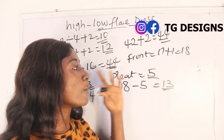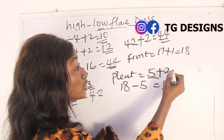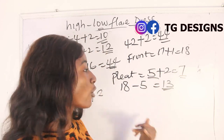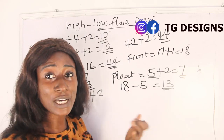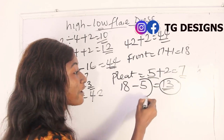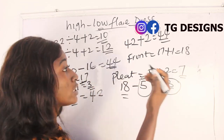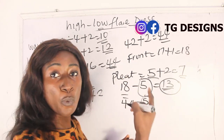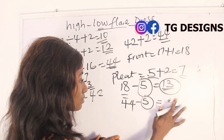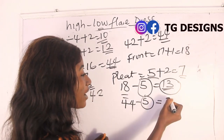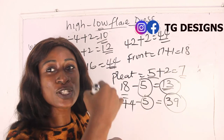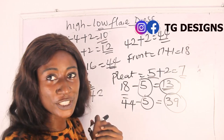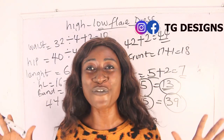When cutting the pleating, take five inches and add two inches folding allowance, giving seven inches — because you fold the pleats before stitching onto the fillet. For the back block, the length is 44 inches; deduct five inches for pleating, giving 39 inches. So when cutting the back block, the length is 39 inches, and by adding five inches of pleating you get the complete 44 inches.